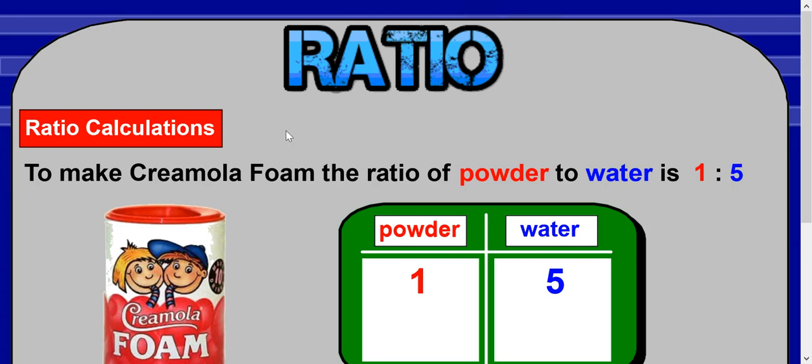Hi guys, this is the last lesson on ratio and it's called ratio calculations. What we're going to try and do here is, given a ratio, be able to determine a missing quantity if we know the other one.